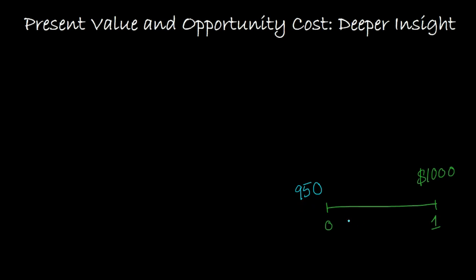Why? Because as we are waiting this one year for this $1,000 to come in, we are potentially losing out on the opportunity to earn additional return if we had the money today. More specifically, if we had $950 today and if we could use that to earn, say, $50 during this one-year time elsewhere, then getting $1,000 one year from now is like getting $950 today, because we could have gotten $50 on this $950 and earned $1,000 ourselves one year out into the future.